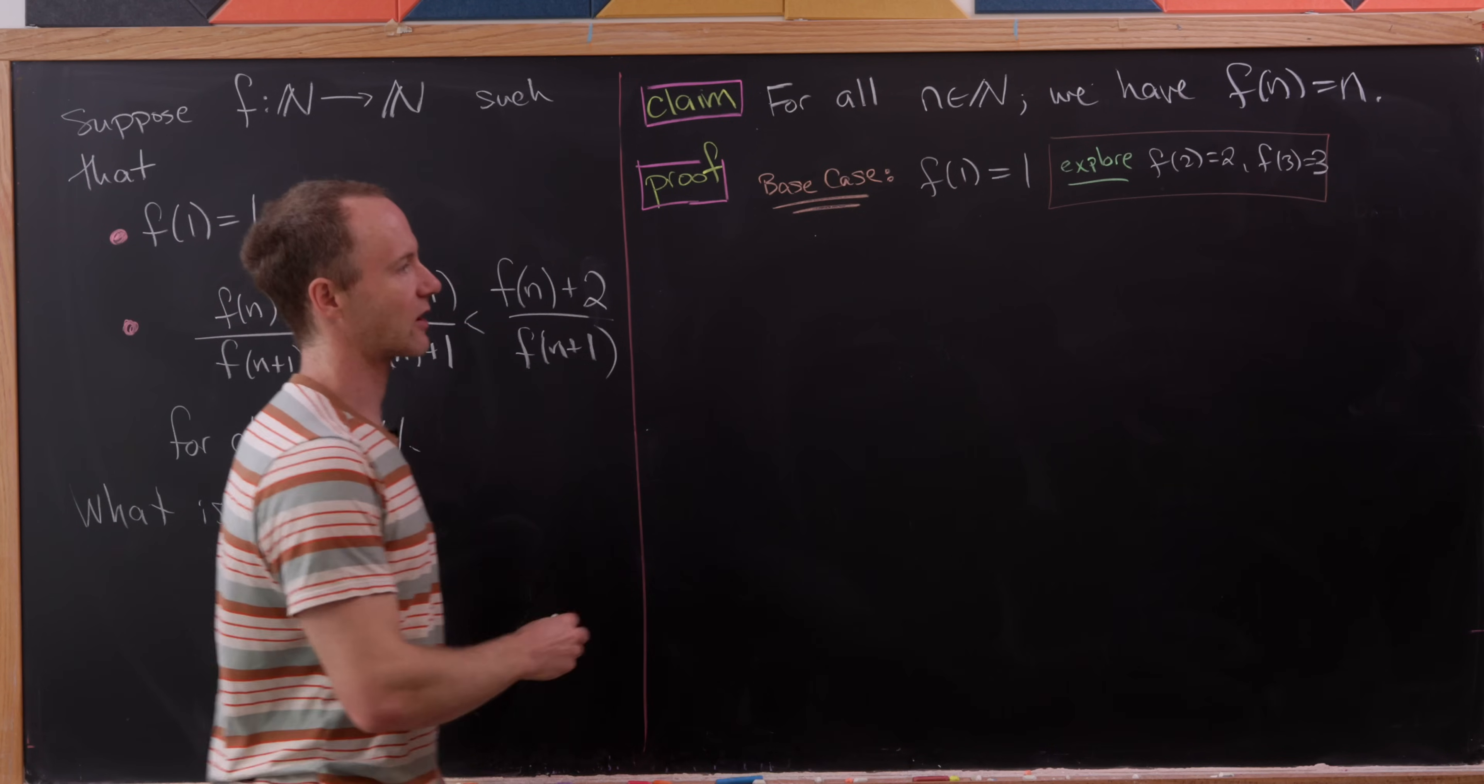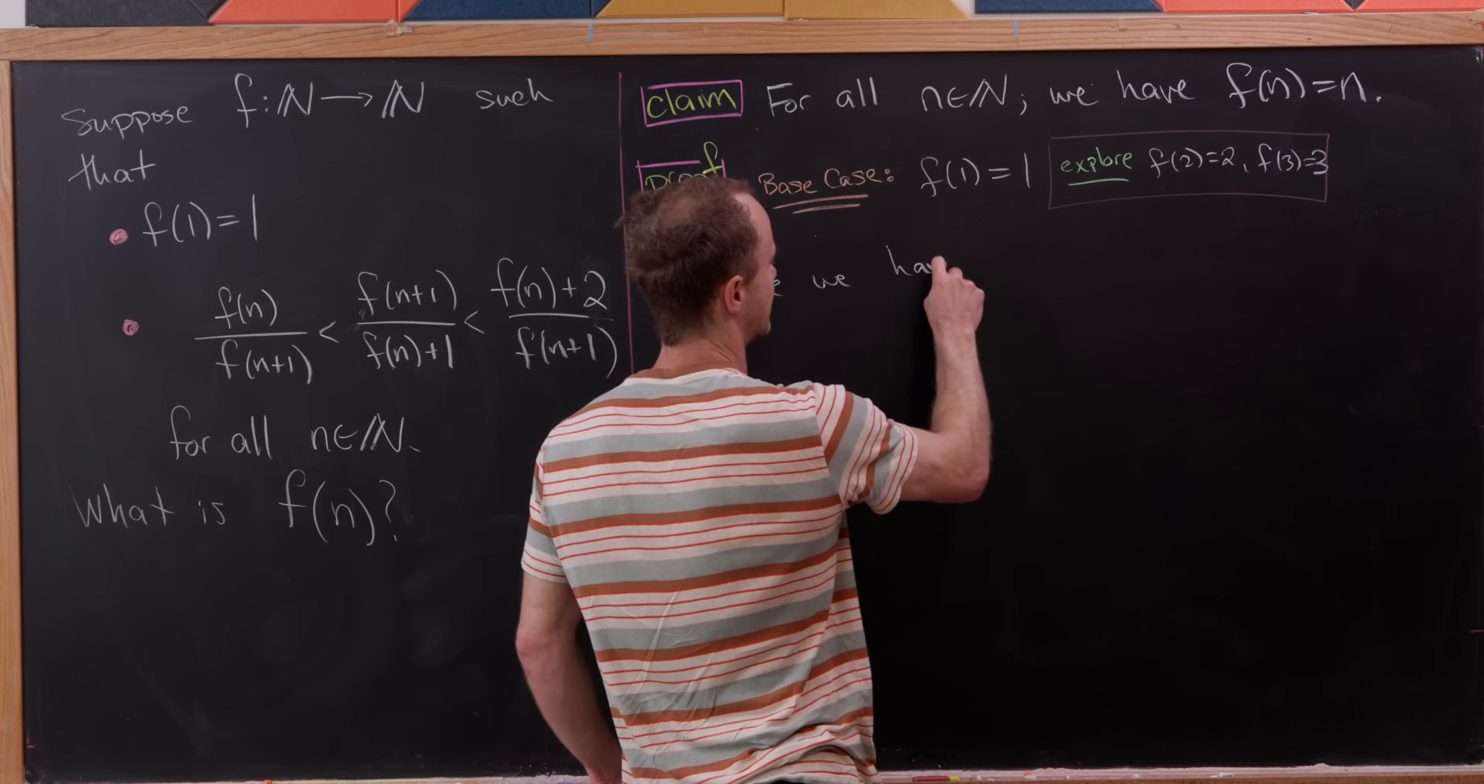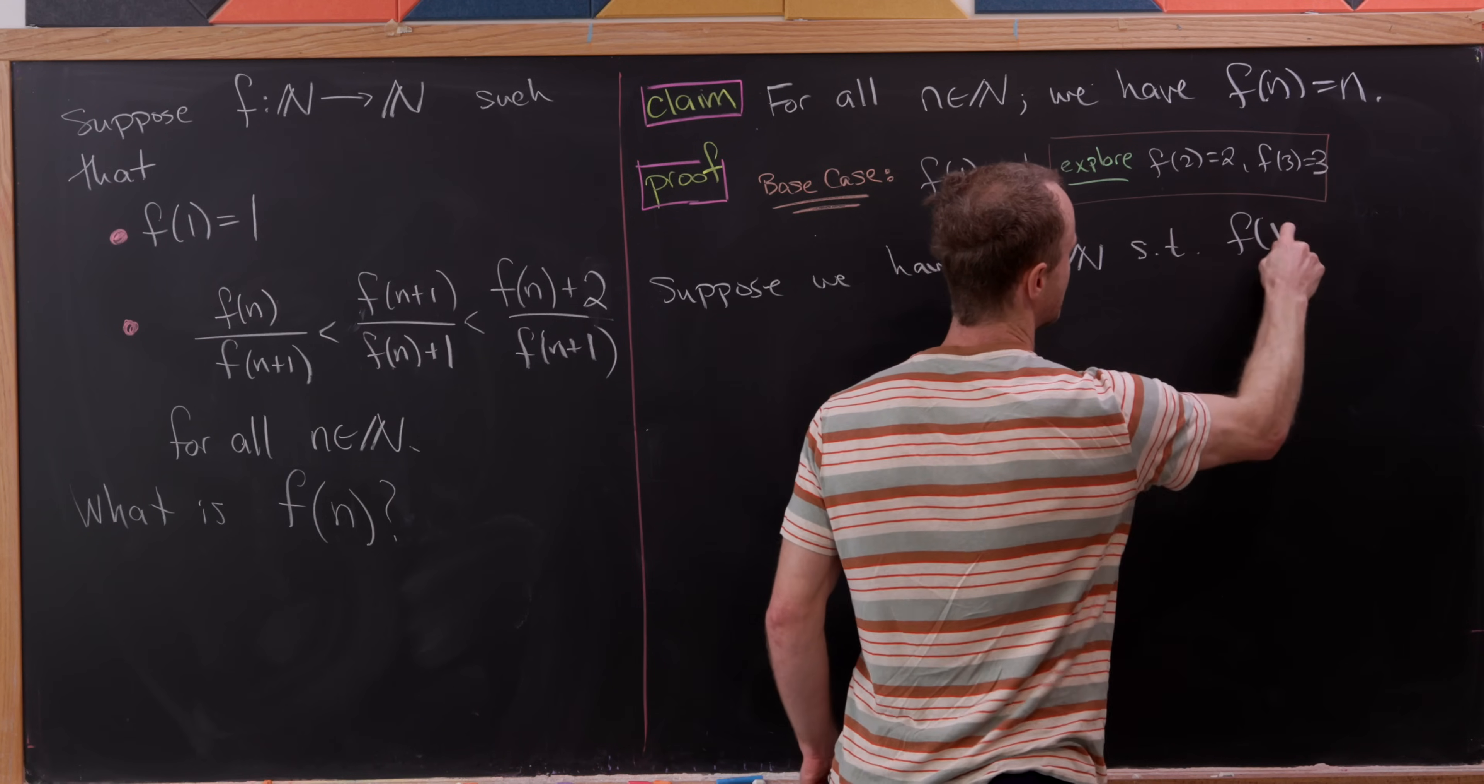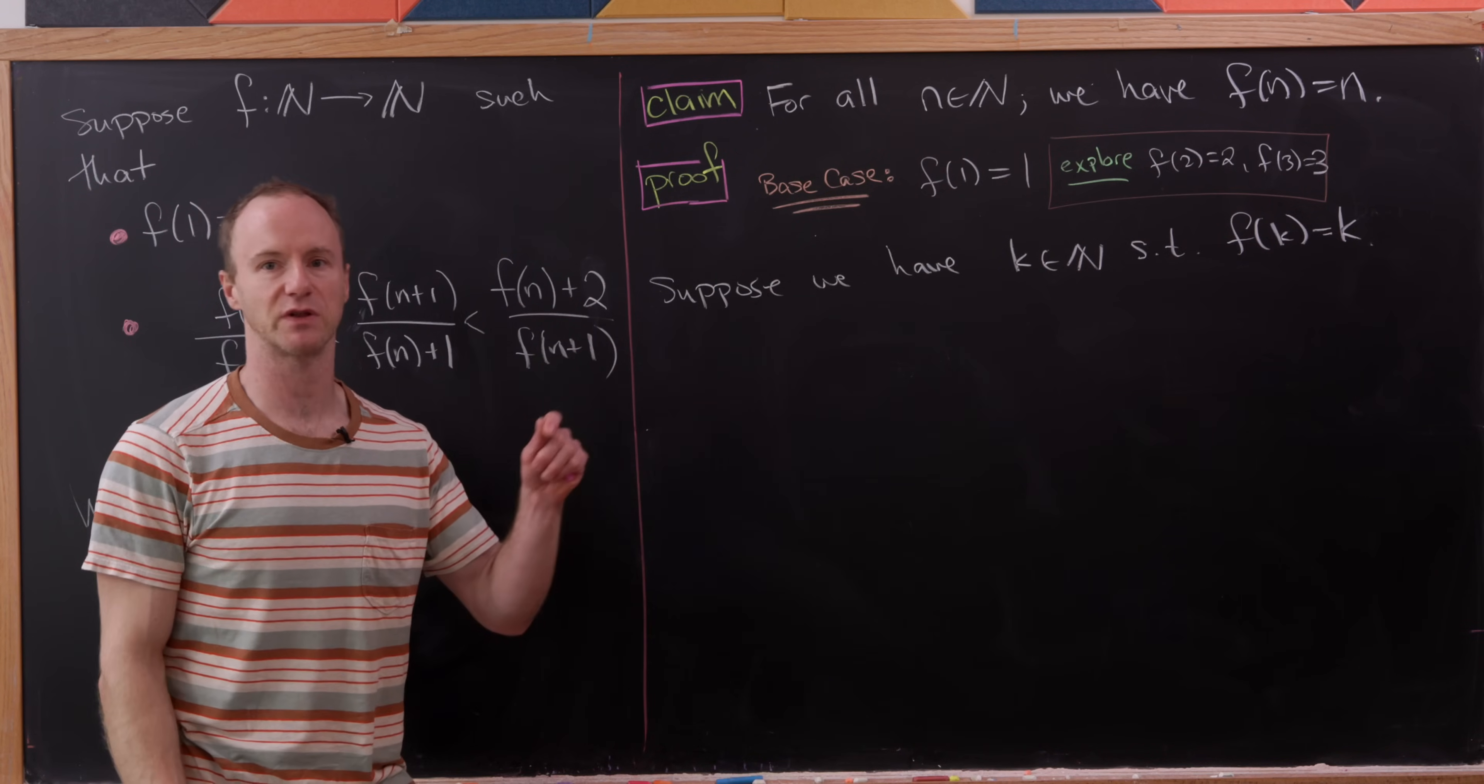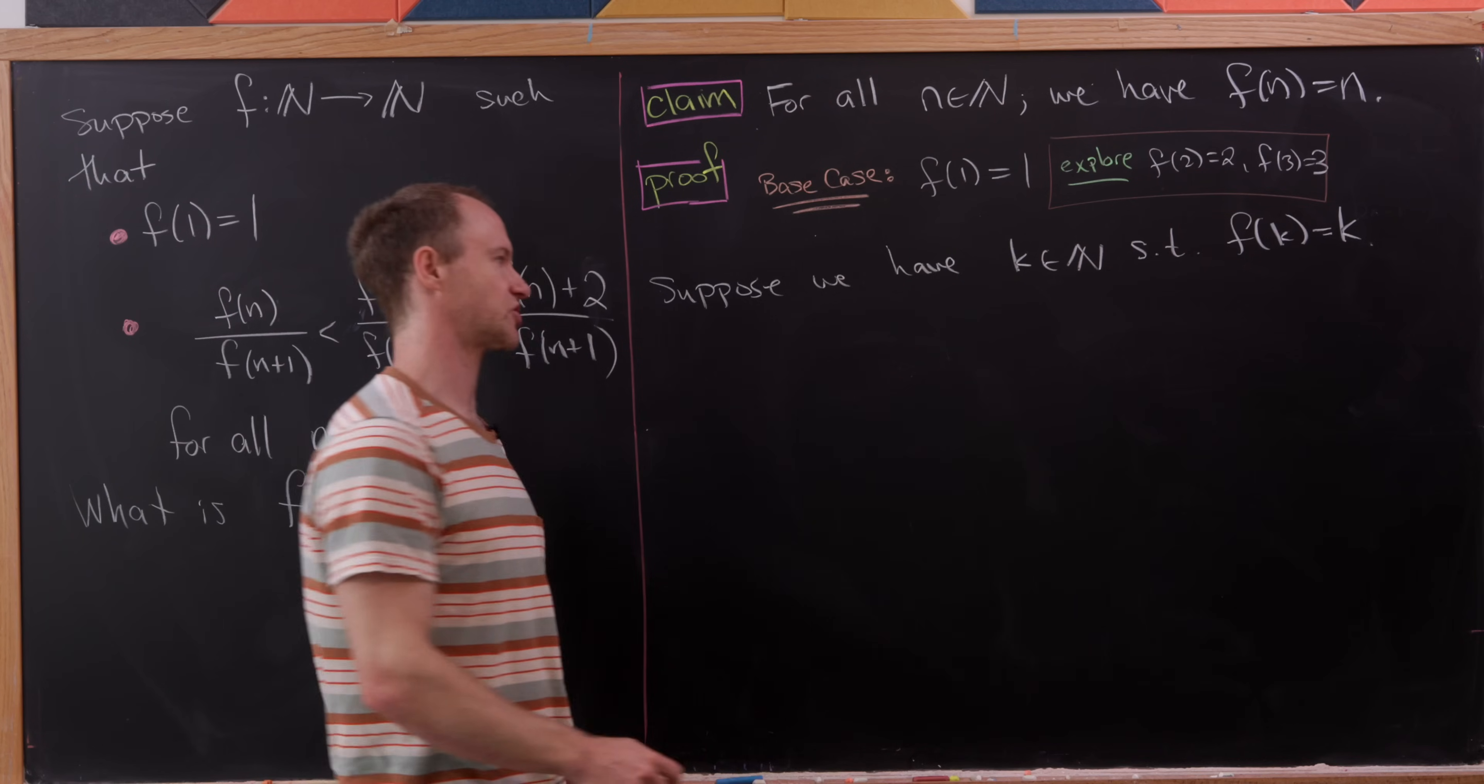So now let's do our induction step. Let's suppose we have some number k, which is a natural number, such that f of k equals k. And then of course what we want to do here is prove that f of k plus one is k plus one, and that will be the end of the proof using the principle of mathematical induction.